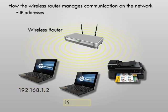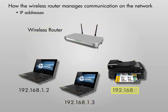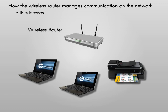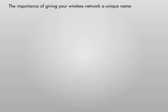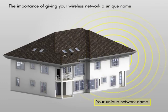An IP address consists of four number segments separated by periods. The local area network is defined by the first three number segments and is shared by all connected devices. The last number is unique for each device. The wireless router itself has an IP address called the Gateway address. It comes pre-assigned by the manufacturer and does not change unless you change it.